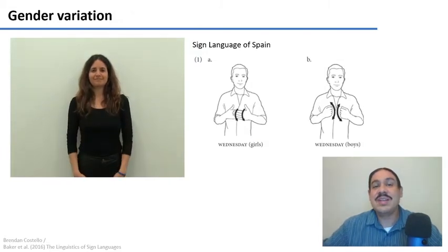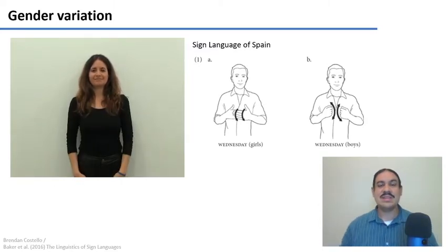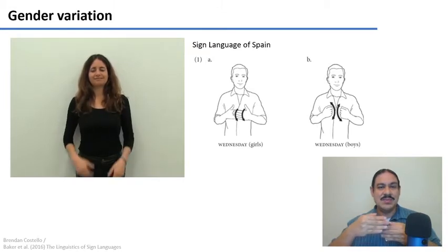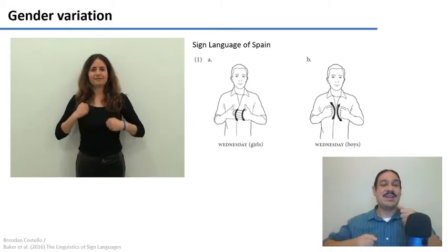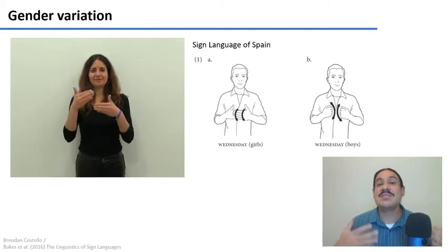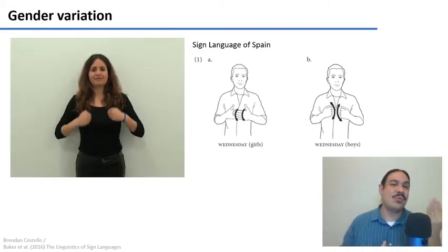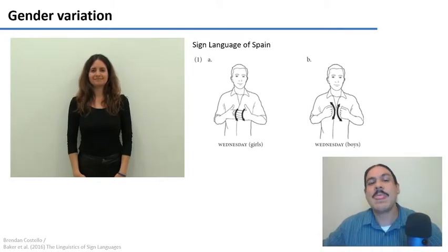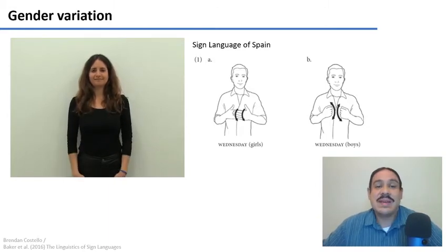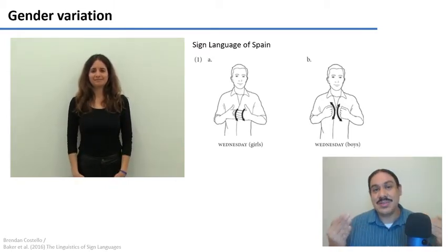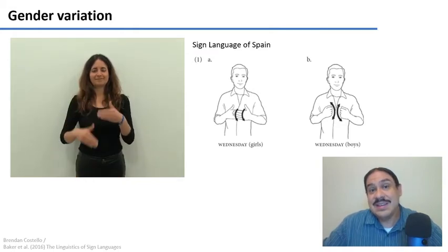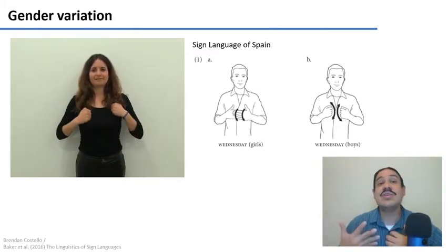You can also have variation by gender in sign languages. This is a very interesting example from the Sign Language of Spain. There is a sign for 'Wednesday' for girls and a sign for 'Wednesday' for boys. This is because these were used in deaf schools that were separated for young children — girls and boys — and so each group developed their own word for 'Wednesday.' Eventually when they came out of school, the variant the boys used was the one that won out and was adopted into the standard for the Sign Language of Spain.